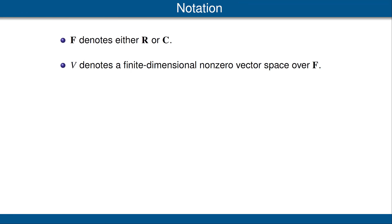Let's start by reviewing our familiar notation. F denotes either the scalar field R of real numbers or the scalar field C of complex numbers. V will denote a finite dimensional non-zero vector space over F. Note that we are no longer assuming that V is an inner product space.